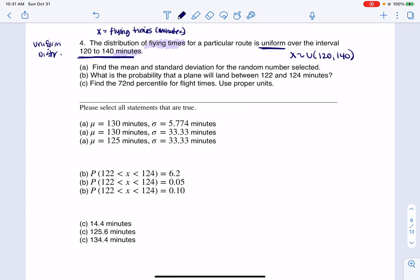So if I want the mean and standard deviation, let's start with part A. The mean is always A plus B over 2. And so if we look at this, this would be 120 plus 140 over 2. And when I crunch that number, I'm going to get 130. The units would be minutes, because the units of any statistic are the same as your variable. So that rules out this option. That's not correct.